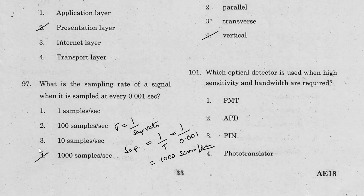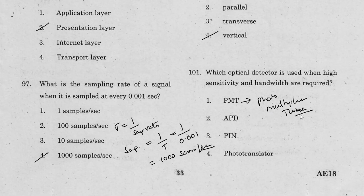Last question: Which optical detector is used when high sensitivity and bandwidth are required? The answer is PMT — photo-multiplier tubes. That's it for this session; we'll continue the remaining questions in upcoming sessions. Thank you friends, have a nice day.